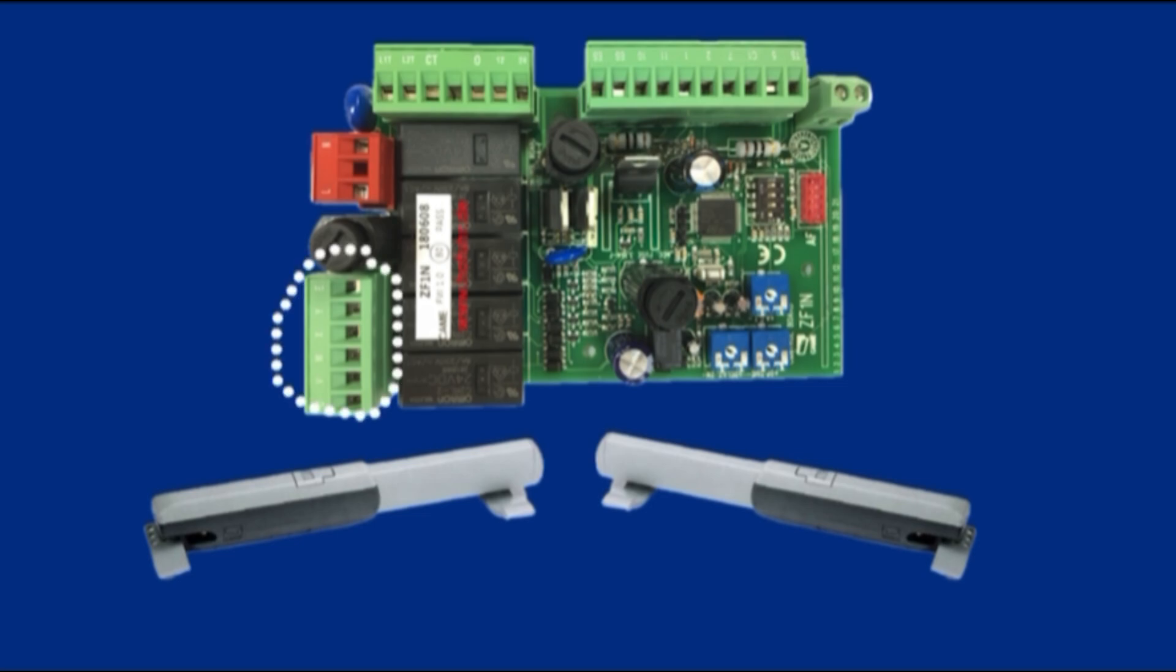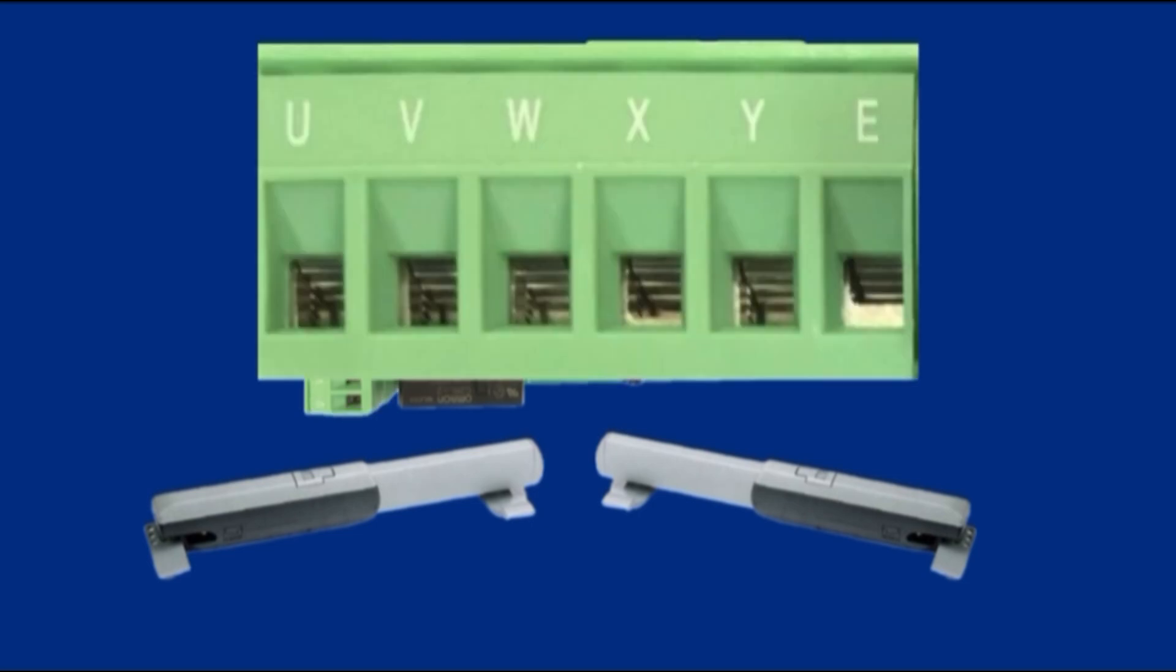Control panel terminal block. The control panel has five output terminals labeled, which are terminals U, V, W, X, Y.